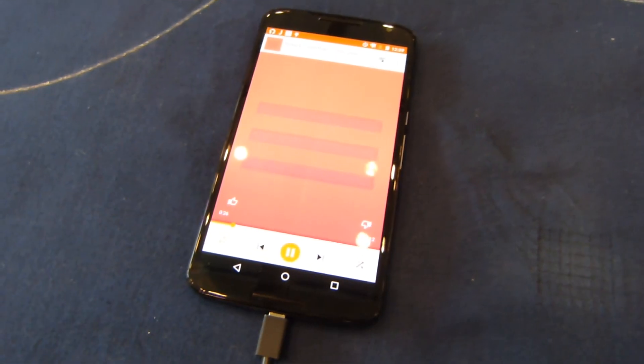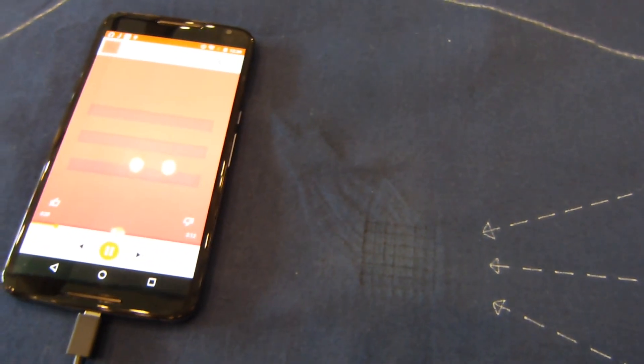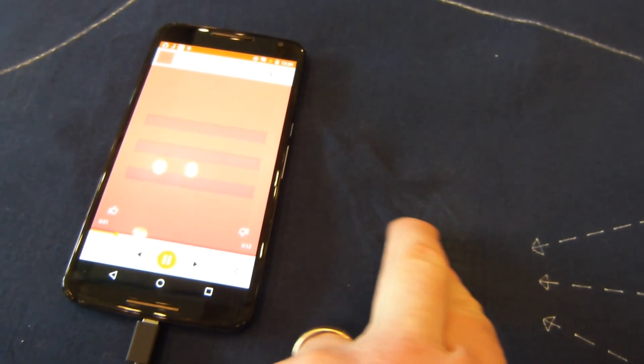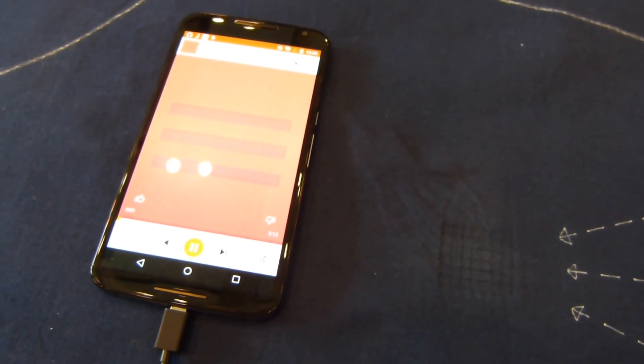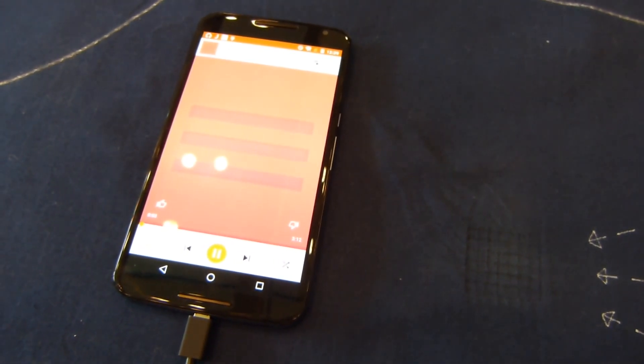And then if I don't like this track and I want to change it, I just swipe to the side and we're on the next track already. It's some smooth jazz which is apropos for San Francisco.